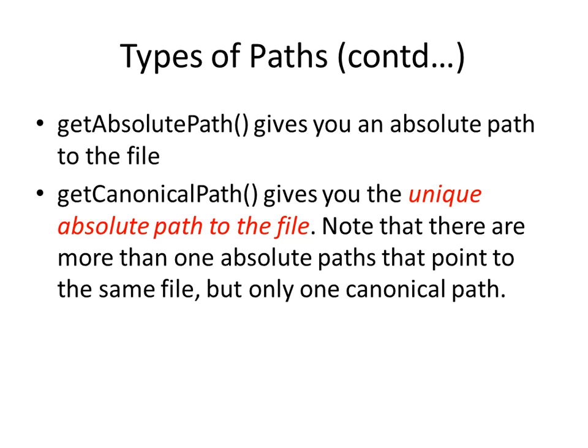getAbsolutePath gives you an absolute path to the file, whereas getCanonicalPath gives you the unique absolute path to the file. The important thing to notice is there can be many absolute paths to a file, but there is only one canonical path, which is also an absolute path. So a canonical path is like a unique absolute path to the file.